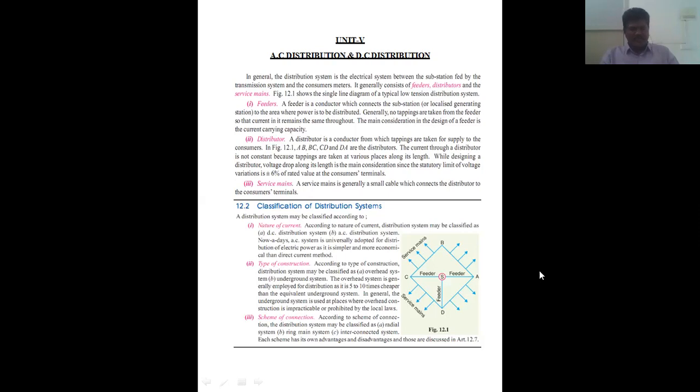The distributor is the conductor from which tappings are taken for supply to the consumers. The current through the distributor is not constant because tappings vary along its length. While designing the distributor, voltage drop along the length is the main consideration, with the permissible voltage variation being plus or minus 6% of rated value at consumer terminals.